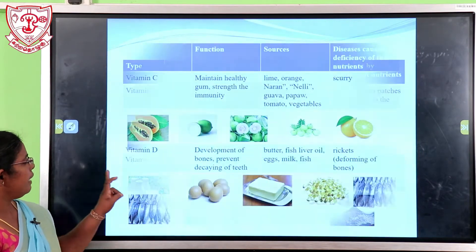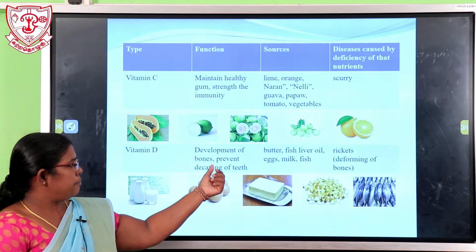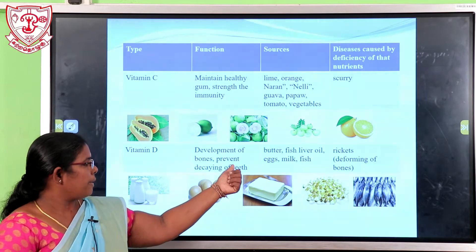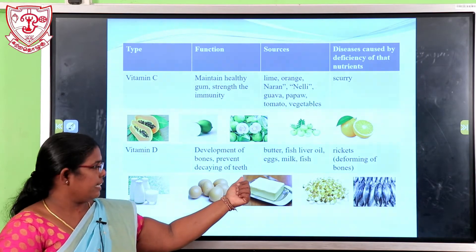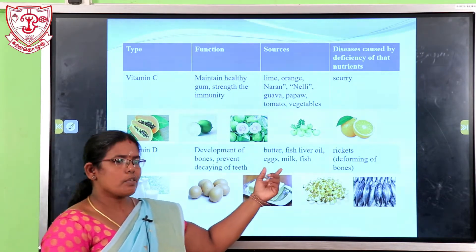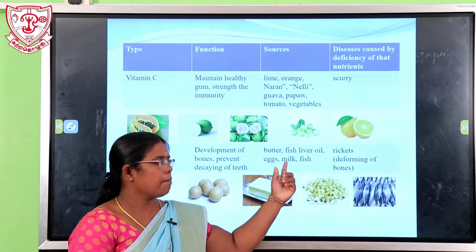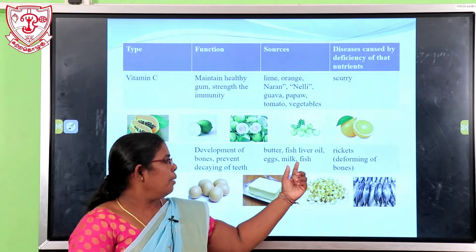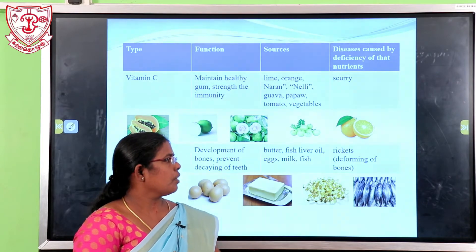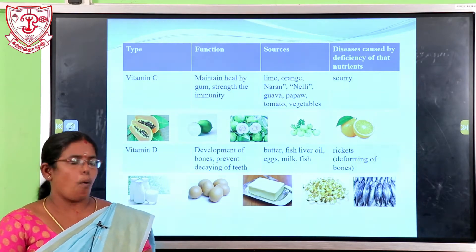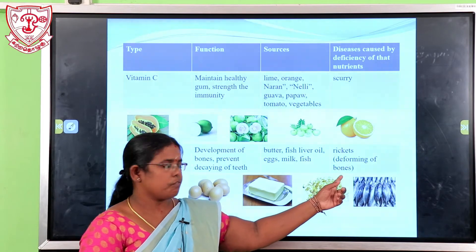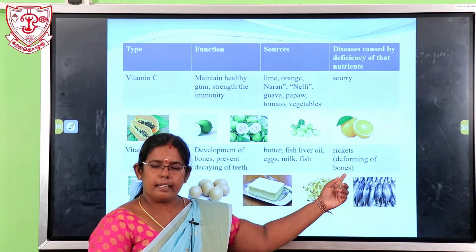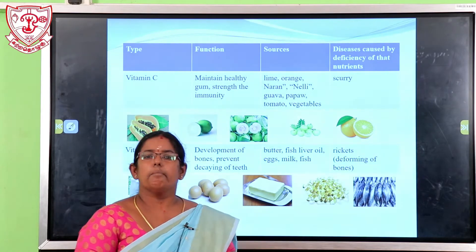Vitamin D helps with the development of hormones and prevents the decay of bones. Sources of Vitamin D include butter, fish liver oil, egg, milk, and fish. The disease caused by deficiency of Vitamin D is rickets, which means the weakening and bending of bones.